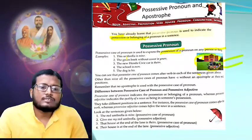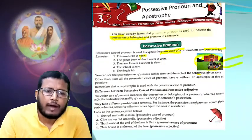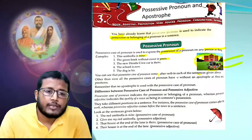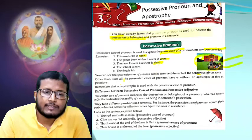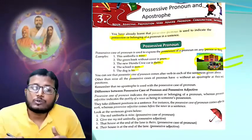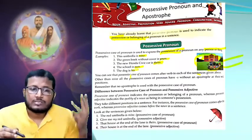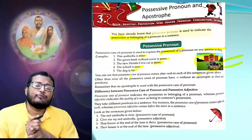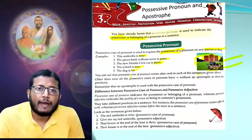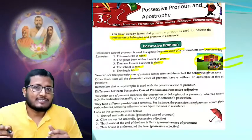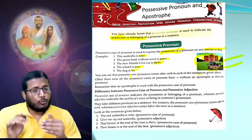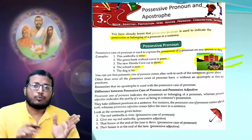Now let's follow the examples. 'This umbrella is mine' — look at the word mine. 'The green book without cover is yours' — the word yours. 'The new Honda Civic car is theirs' — theirs. 'The school is ours' — ours. 'The dog is his.' The highlighted words are mine, yours, theirs, ours, his. Look carefully — some words end with S and some do not. For example, mine has no S, but yours has S.